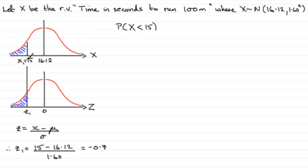So, what we're saying, basically, is 15 is 0.7 standard deviations below the mean. That's what the z value is trying to tell us. So, when it comes to working out the probability that X is less than 15, then, it's exactly the same as working out the probability that Z is less than minus 0.7 standard deviations below the mean.